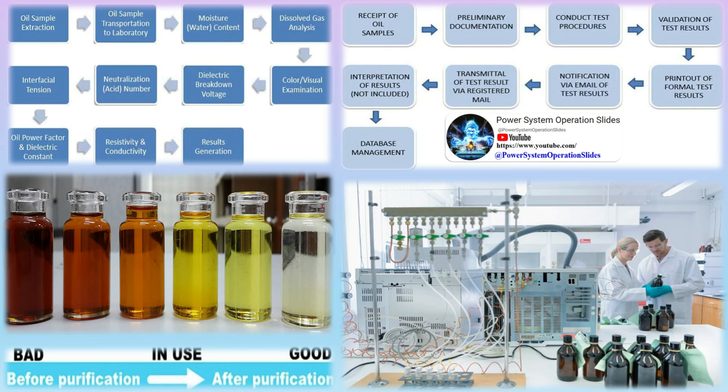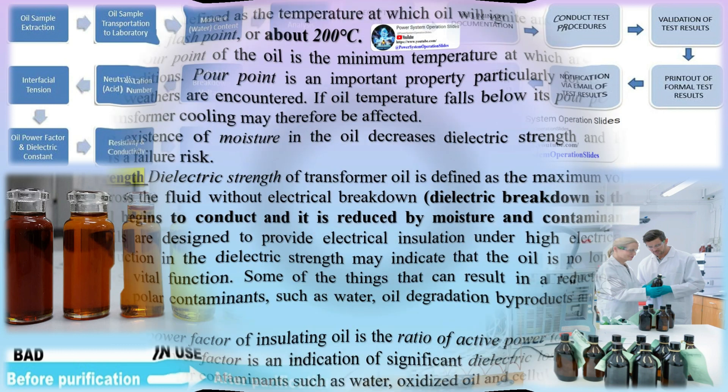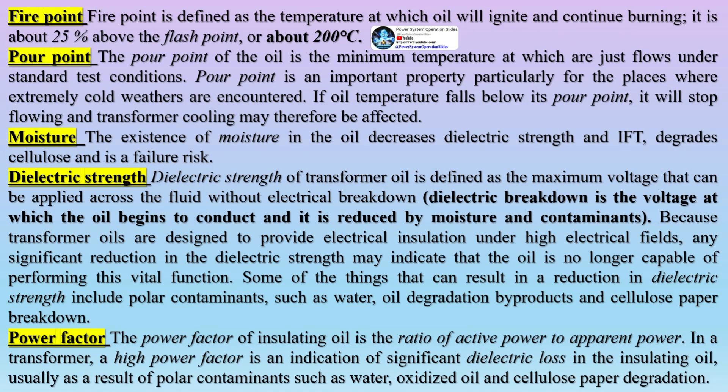Firepoint: the firepoint is defined as the temperature at which oil will ignite and continue burning; it is about 25% above the flashpoint, or about 200 degrees Celsius. Pourpoint: the pourpoint of the oil is the minimum temperature at which the oil just flows under standard test conditions. It is an important property particularly for places where extremely cold weather is encountered. If the oil temperature falls below its pourpoint, it will stop flowing and transformer cooling may therefore be affected.